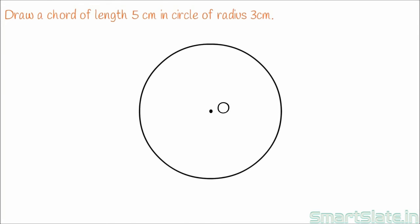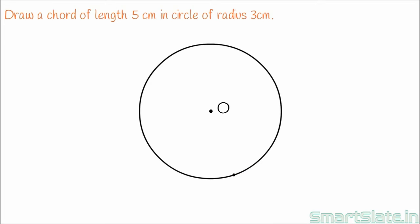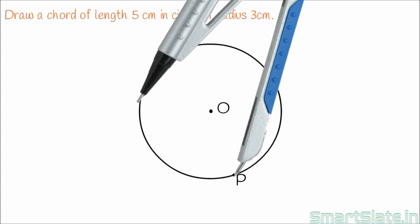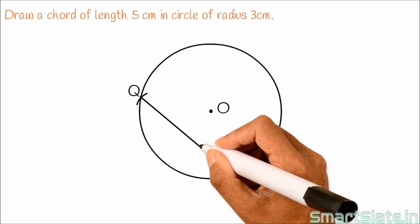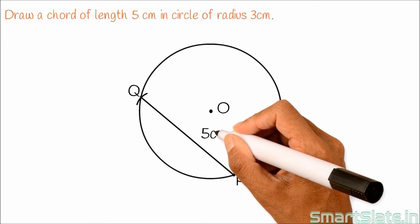Second step is to mark any point on the circle, like this one. Name this point as P. This point will be one end of chord line segment. Since chord in question is 5 cm, draw an arc keeping P as a center which intersects the circle. This intersection point is Q. Now connect P and Q. We have chord of length 5 cm here.